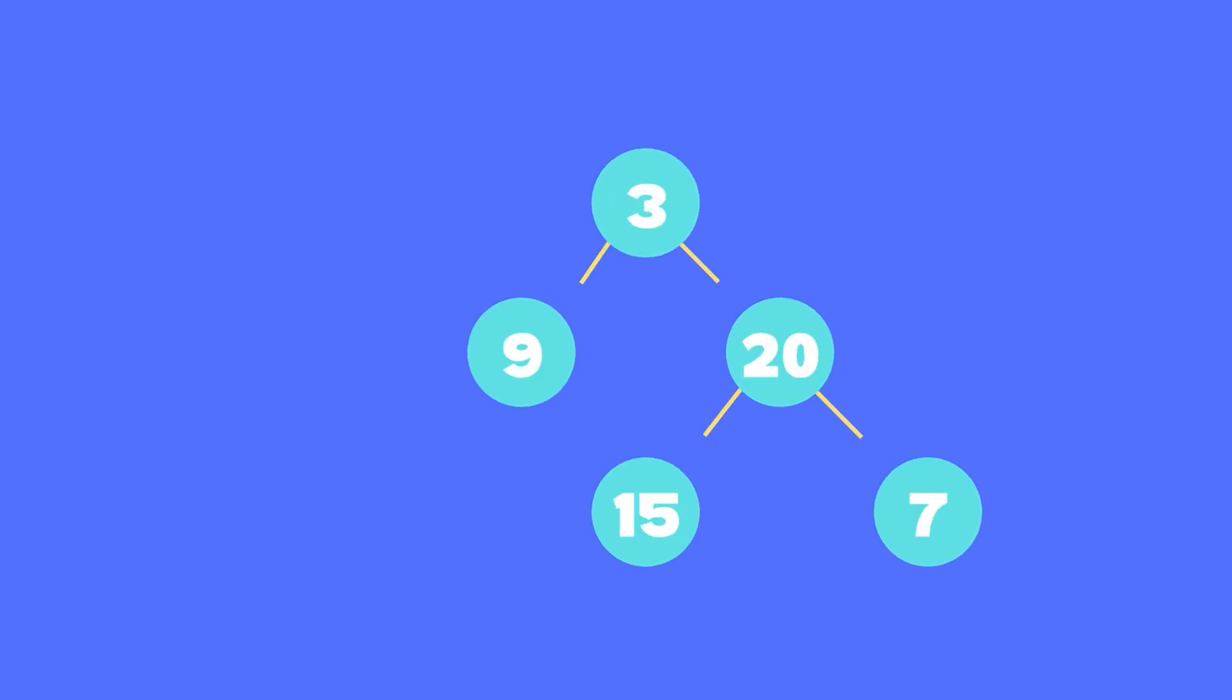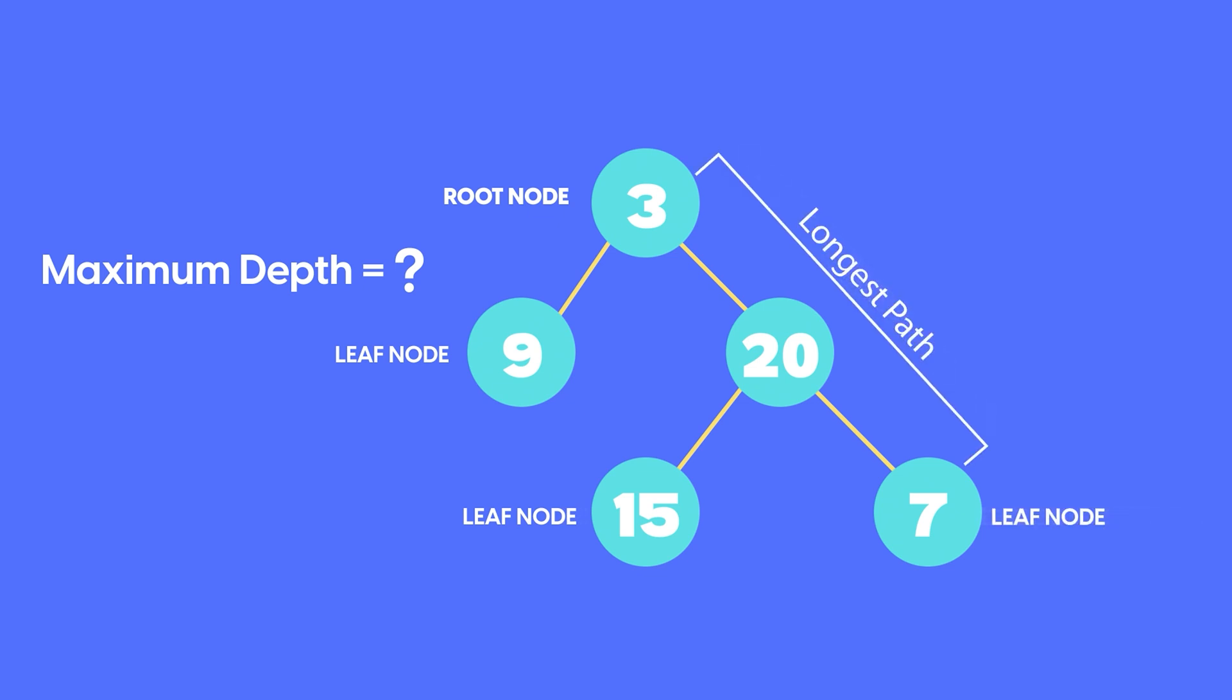In the given problem, you need to find the maximum depth of a binary tree. Maximum depth is defined as the total number of nodes along the longest path from the root node to a leaf node. If you look at the given example, the longest path on the tree is this path that contains a total of three nodes, namely 3, 20 and 7. So in this case, we'll return 3 as the answer.